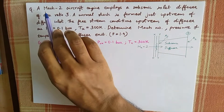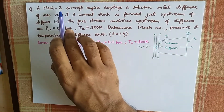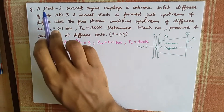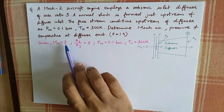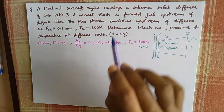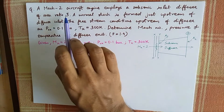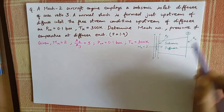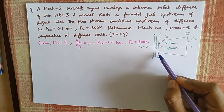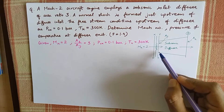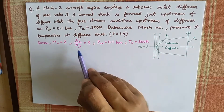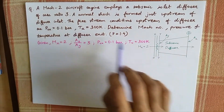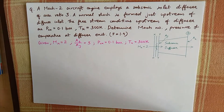Given conditions: Mach number Mx is equal to 2. The area ratio A2 by Ay is 3, where section 2 is downstream of the normal shock. P0x is equal to 0.1 bar and Tx is equal to 300 Kelvin. The flow from the inlet to exit follows an isentropic process.